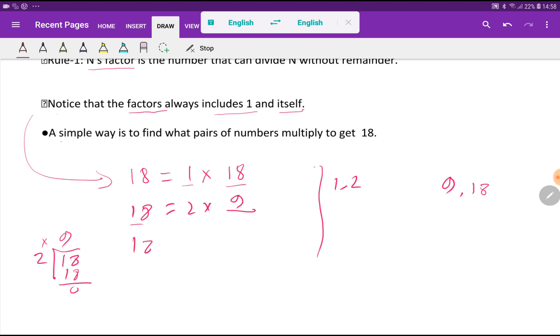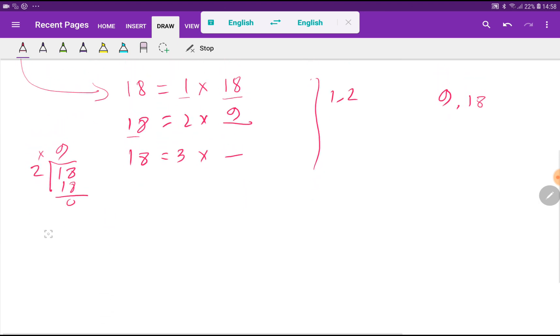Now we have to check for 3. If I divide 18 by 3, that is 3 goes into 18 six times. So here we have to write 6.